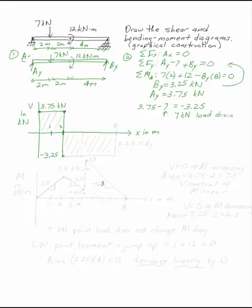The seven kilonewton load down drops your V diagram by seven. Now nothing else happens at three or four. At four, I have the point moment, but that does not alter my V diagram. Five, six, seven, eight,